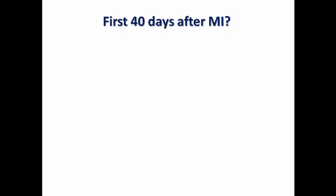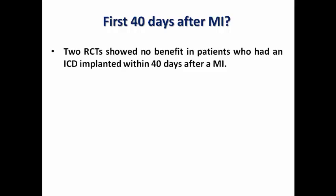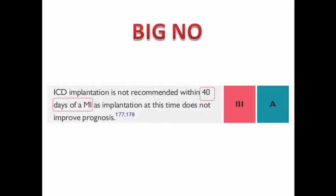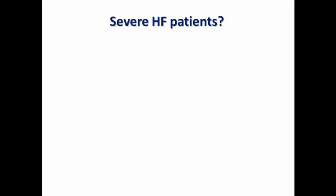We always emphasize excluding the first 40 days after MI onset from the decision for primary prevention ICD. Two randomized controlled trials showed no benefit in patients who received an ICD within the first 40 days after MI — arrhythmic deaths were reduced, but this was balanced by an increase in non-arrhythmic deaths, most commonly pump failure. Therefore, ICD implantation is not recommended for primary prevention within the first 40 days after MI, as it does not improve prognosis.